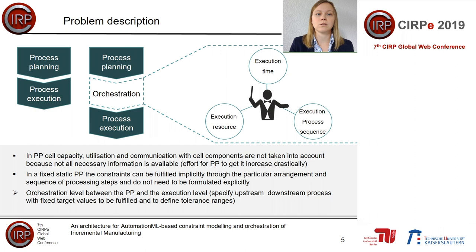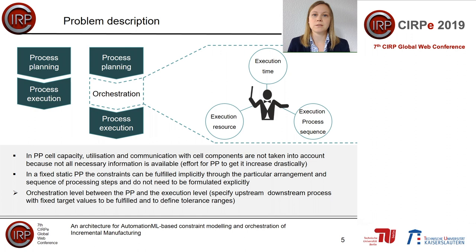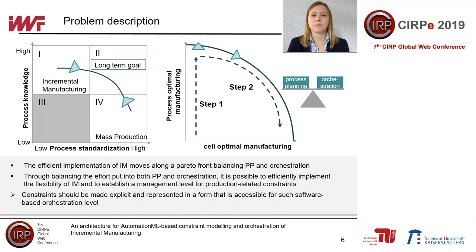One possibility to overcome the limitations of current process planning approaches is to integrate a new level called orchestration, which is able to manage — based on process constraint knowledge — the execution time, execution resource, and execution sequence of a manufacturing step. The orchestration level is closer to the execution level and is able to get important data from the real manufacturing process faster than the process planning level. In the following, we will have a closer look at the advantages of an orchestration management level.